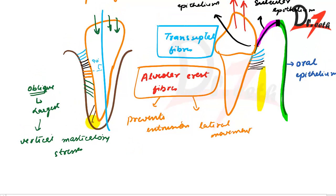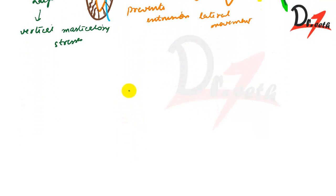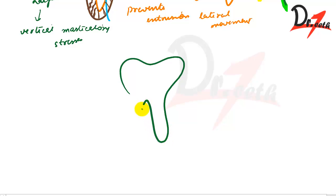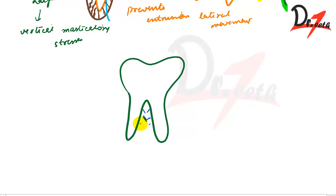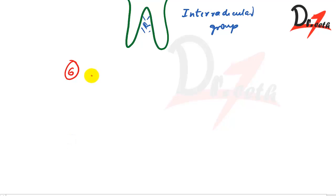The apical group fibers are placed apically and radiate in an irregular fashion from the cementum to the bone at the apical region of the socket. They are not present in incompletely formed roots. The inter-radicular group is present in the furcation areas of multi-rooted teeth.